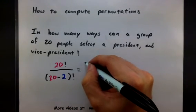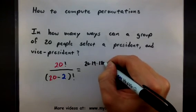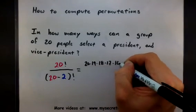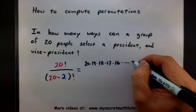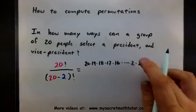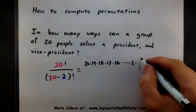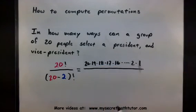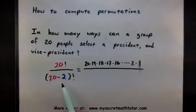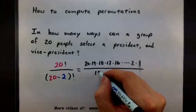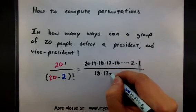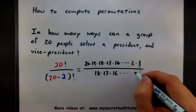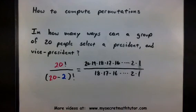So 20 factorial is basically 20 times 19 times 18 times 17 times 16 and that really just keeps going on and on until eventually you get to 2 times 1. On the bottom, we have 20 minus 2 and then that's factorial. So 20 minus 2 is 18. So on the bottom, we essentially have 18 factorial or 18 times 17 times 16 and that keeps on going down until eventually you reach 2 times 1.